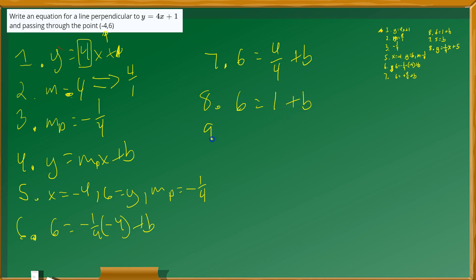Lastly, at step 9, you will have 6 minus 1. So it's going to give you 5 equals the value of b, which means that the equation of the line perpendicular to the one given will be this one right here.